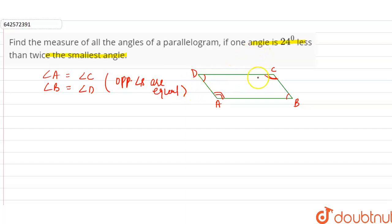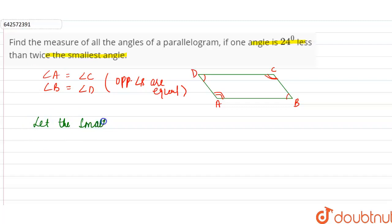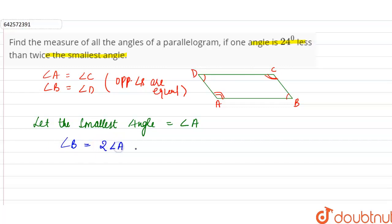Therefore, we can say that if we talk about one angle, we can take angle A. So we can say angle A, which is equal to angle C, is 24 less than twice the smallest angle. Firstly, we have to let the smallest angle. So let the smallest angle of the parallelogram be angle A. Then angle B will be equal to 24 less than twice the smallest angle, so angle B equals twice angle A minus 24 degrees.